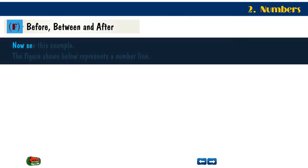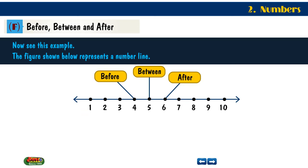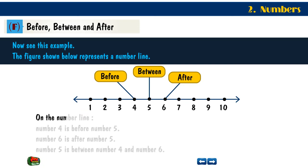Now see this example. The figure shown below represents a number line: Before, Between, After. On the number line, Number 4 is Before Number 5. Number 6 is After Number 5. Number 5 is Between Number 4 and Number 6.